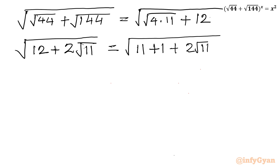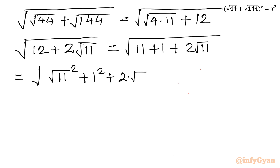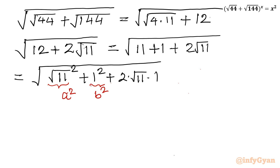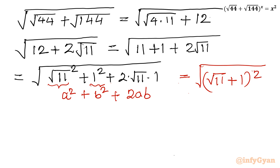So I can write the expression under the square root as: (√11)² + 1² + 2·(√11)·1. This is recalling the algebraic identity (a + b)² = a² + 2ab + b². Here a = √11 and b = 1, so this is equal to √((√11 + 1)²). Now we can cancel the square root and the square, so ultimately our base simplifies to √11 + 1.